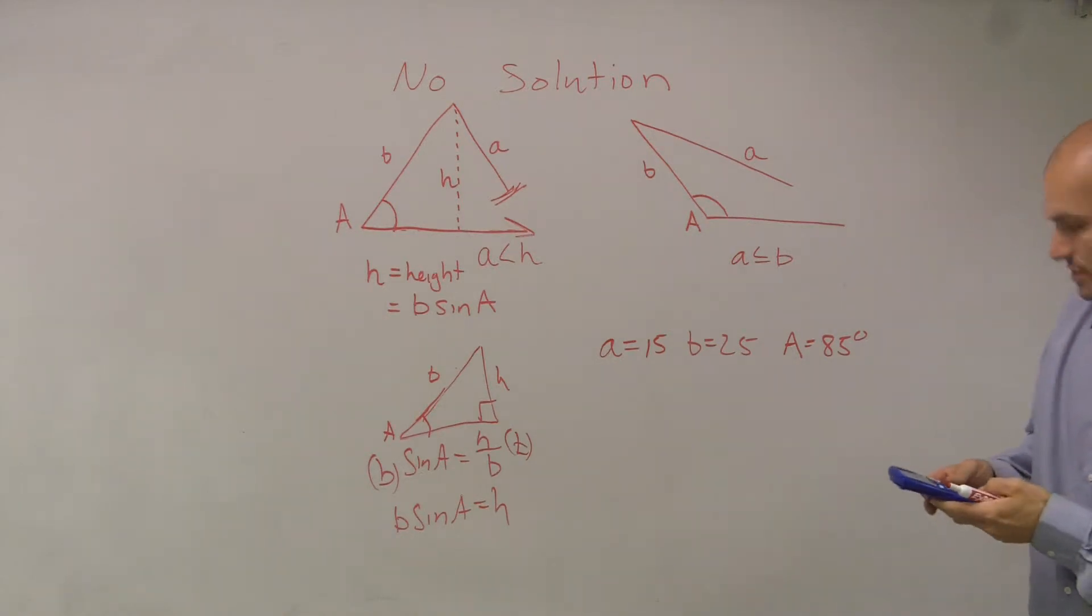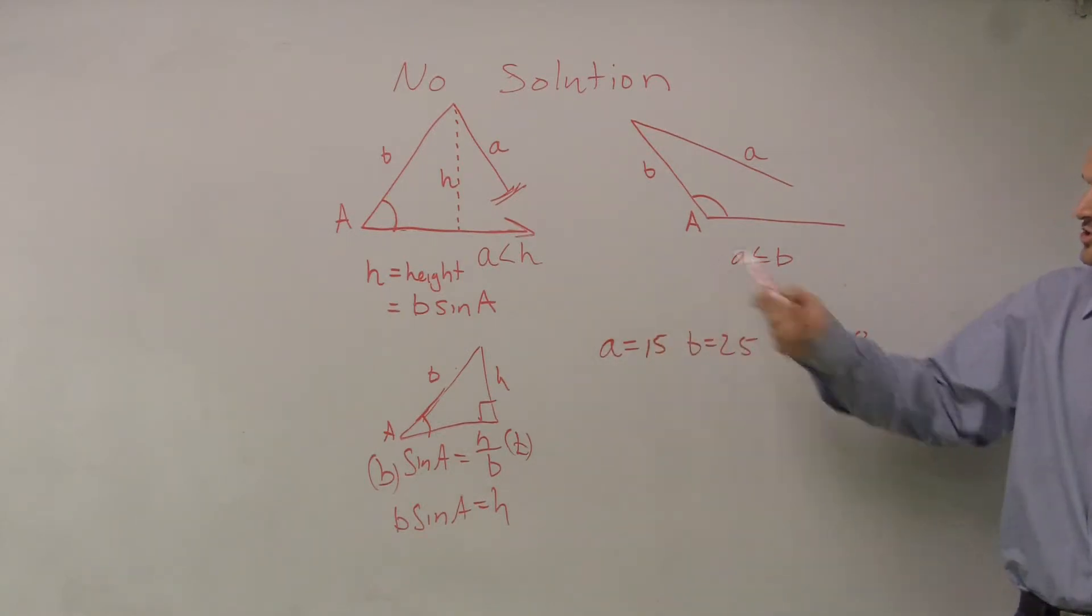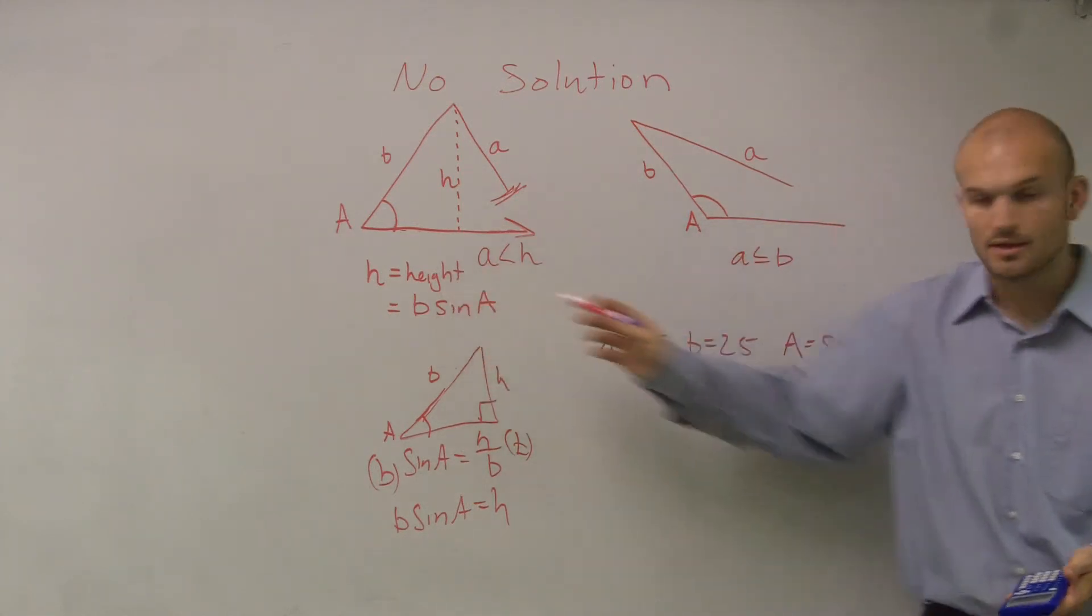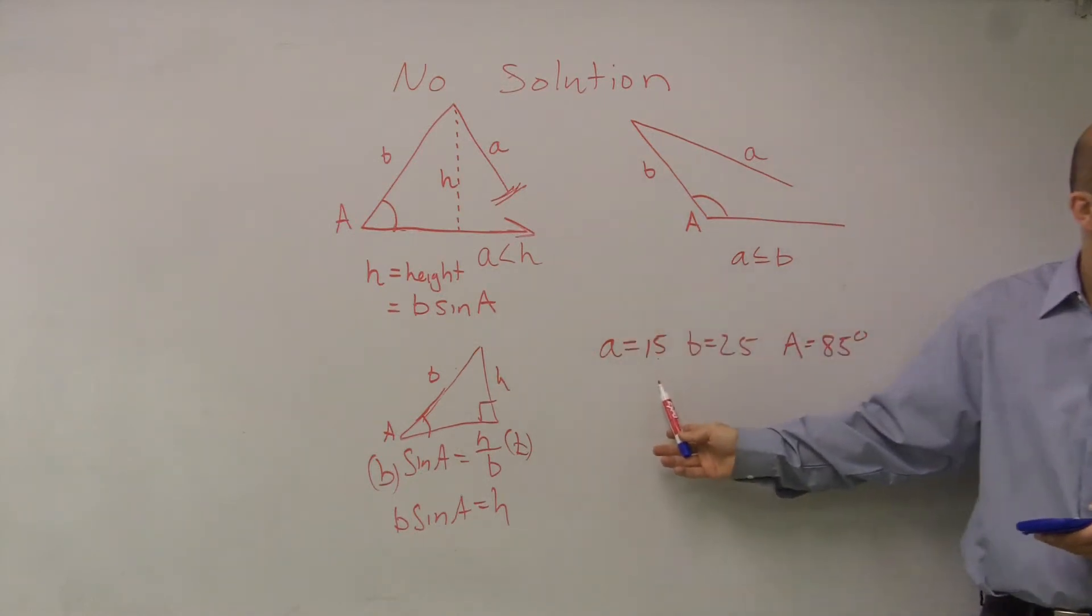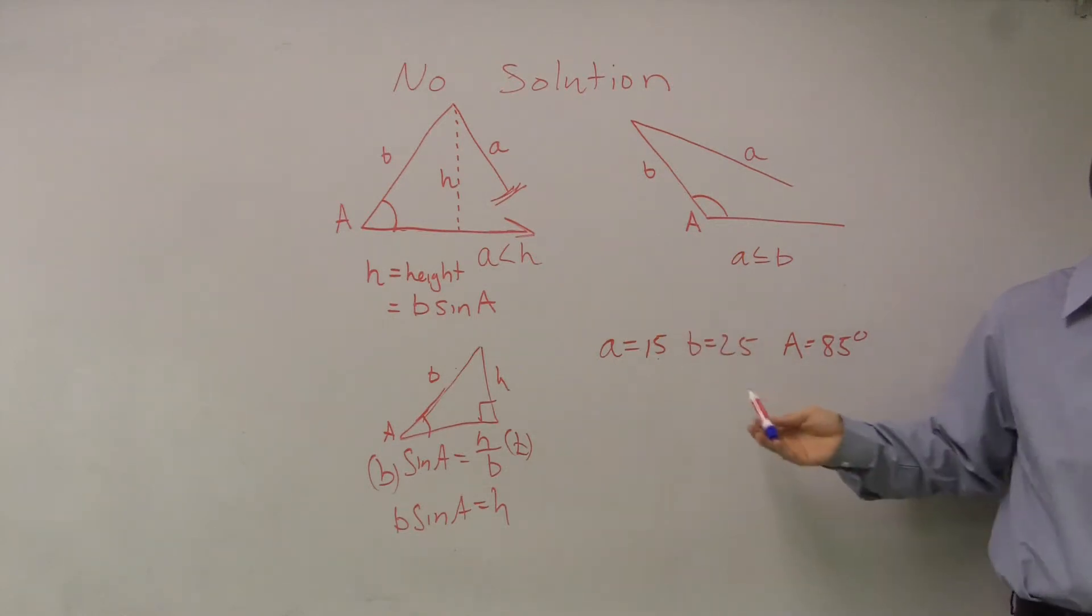Now, you guys can plug in B times sine of A, and actually, well, let's just take a look at it. We can do B, which is 25, times your sine of A, which is 85 degrees. And what I get is 24.9. So my H is 24.9. Is my A smaller than 24.9? I did B times sine of A to get my height. That equals 24.49. So H is 24.49. Is my A smaller than 24.49? Yes. So therefore, this is no solution.